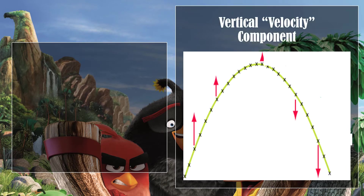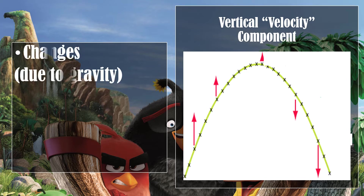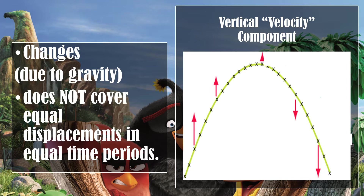The vertical velocity component changes due to gravity. It does not cover equal displacements in equal time periods. As the height of the object increases, the velocity decreases. But as the height of the object decreases, the velocity increases. Therefore, the relationship between the height of the object and the velocity is indirectly proportional.